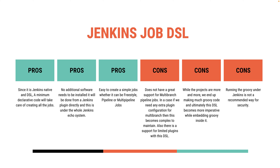However, when it comes to complex jobs — especially multi-branch pipelines — it has a disadvantage. Writing the DSL for a multi-branch pipeline that enables certain configurations with third-party plugins becomes very challenging, and we end up with no support for certain complex configurations inside the Jenkins Job DSL. You can work around it with some Groovy wrapping, but it becomes imperative rather than declarative, which defeats the purpose.